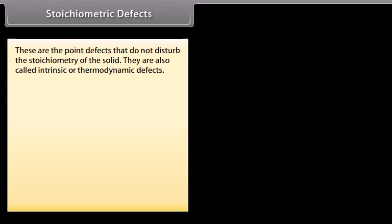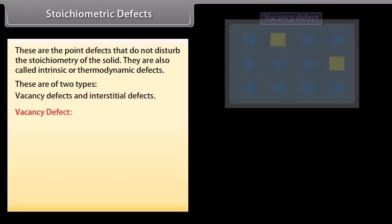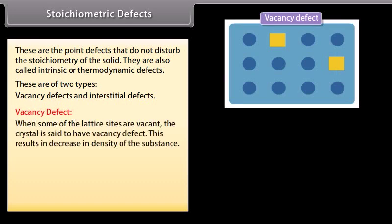Stoichiometric defects are point defects that do not disturb the stoichiometry of the solid. They are also called intrinsic or thermodynamic defects. These are of two types: vacancy defects and interstitial defects. Vacancy defect occurs when some of the lattice sites are vacant. The crystal is said to have vacancy defect. This results in decrease in density of the substance.